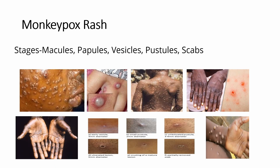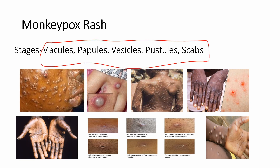Monkeypox rash appears one to five days after the first symptom. The rash often begins on the face, then spreads elsewhere on the body, including the palms of the hands and soles of the feet. It starts as raised spots that form into fluid-filled blisters, then scabs which fall off. The lesions can be itchy and painful. The rash can also resemble chickenpox or syphilis.